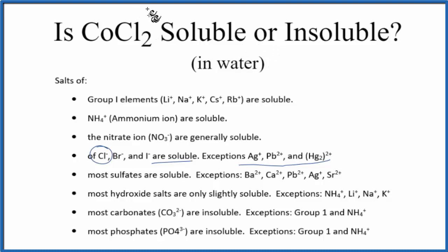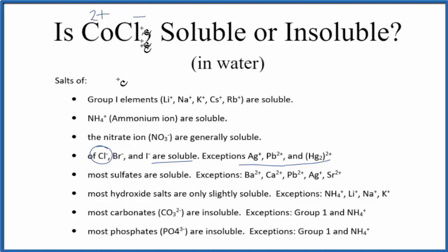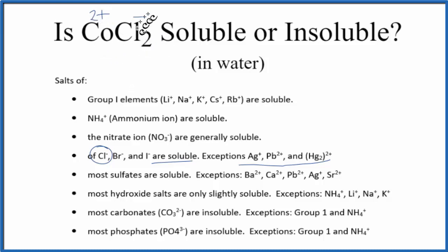What that means is we know that chlorides have that minus charge — one minus. We have two of them, so the cobalt has to be 2+. That's why we're calling it cobalt-2-chloride. So when we put this in water, it's going to split apart and dissociate into its ions. We'll have the cobalt-2 ion, Co2+, that'll be aqueous, and we'll have two chloride ions, Cl-, which will also be aqueous.